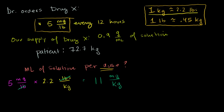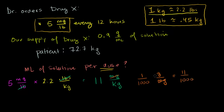We've just converted our dosage information to a pure metric system — it was a mix of metric and English before. Now let's convert it to grams, since we have milligrams here and grams in our supply info. We want milligrams in the denominator and grams in the numerator so they cancel out. There is 1 gram per 1,000 milligrams, so the milligrams cancel and we get 11 over 1,000 grams per kilogram.